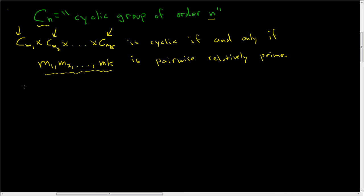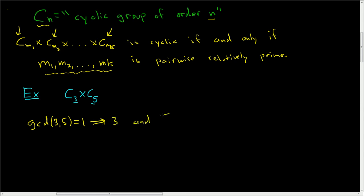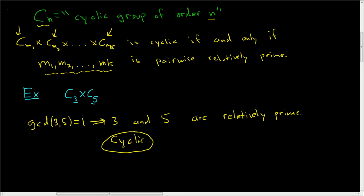Let's do a couple of examples, starting with easy ones. Let's look at the cyclic group of order 3 and take the direct product of that with the cyclic group of order 5. In this case, the orders are 3 and 5. If we take the greatest common divisor of the orders, we get 1 — that means 3 and 5 are relatively prime, so this group is cyclic.